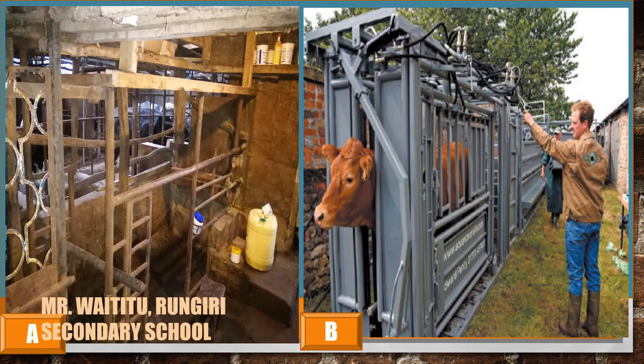Now A and B are examples of such structures. Could you identify the structures labeled A and B? Well, the two of them are crushes. A is a structure that we majorly use in small-scale farming — most of the time it is used as a dairy shed or milking parlor as well as a crush, so we carry out all the routine management practices in that structure.